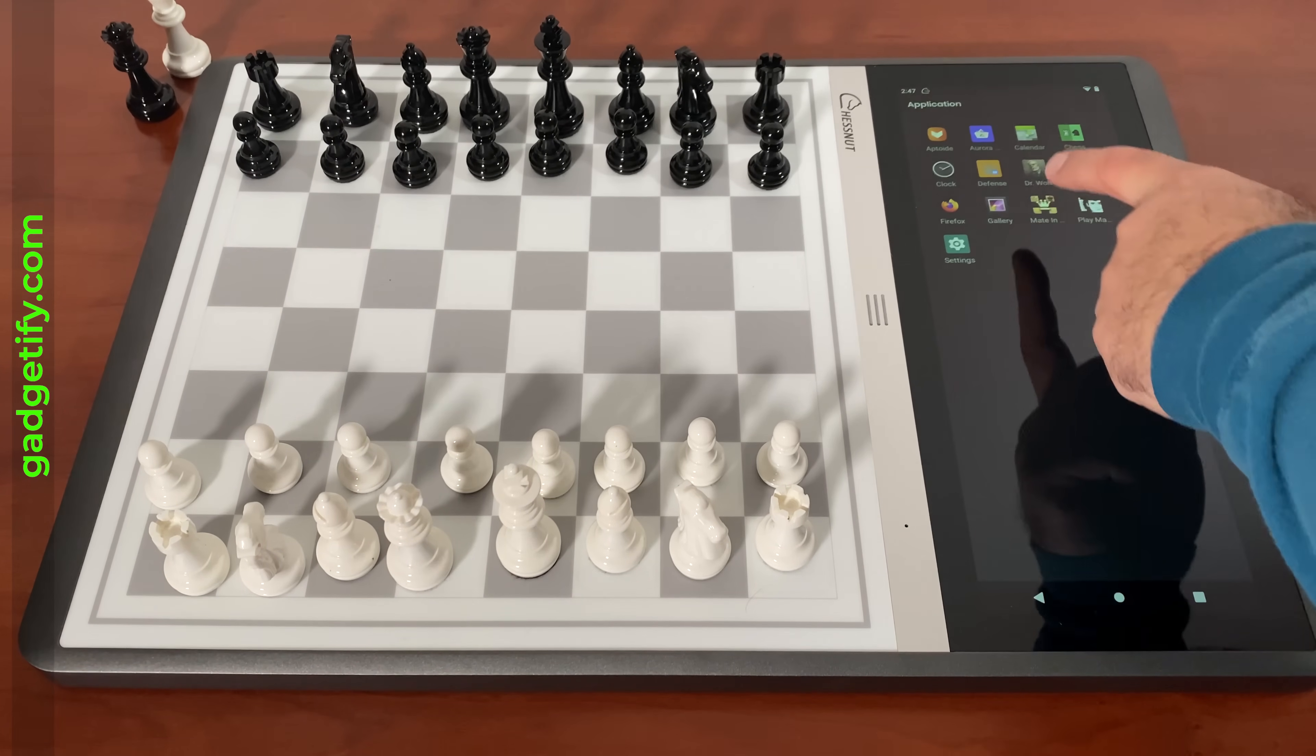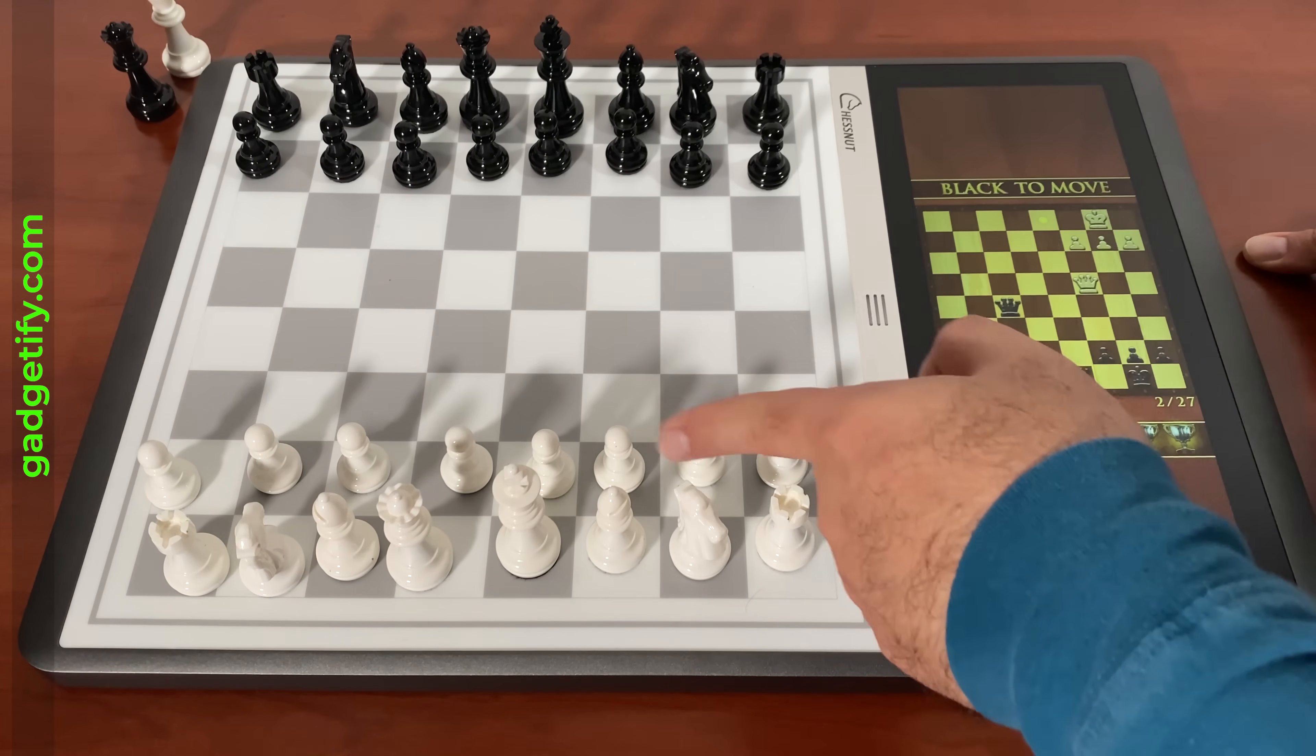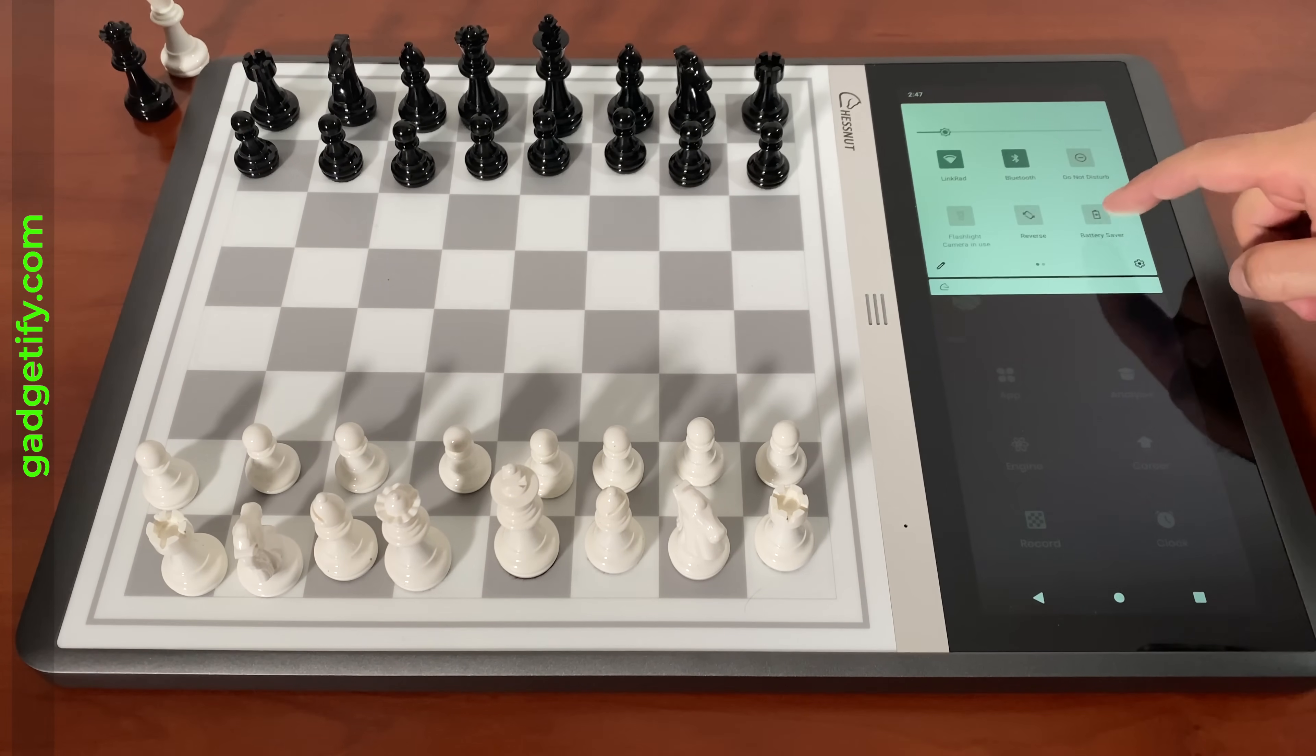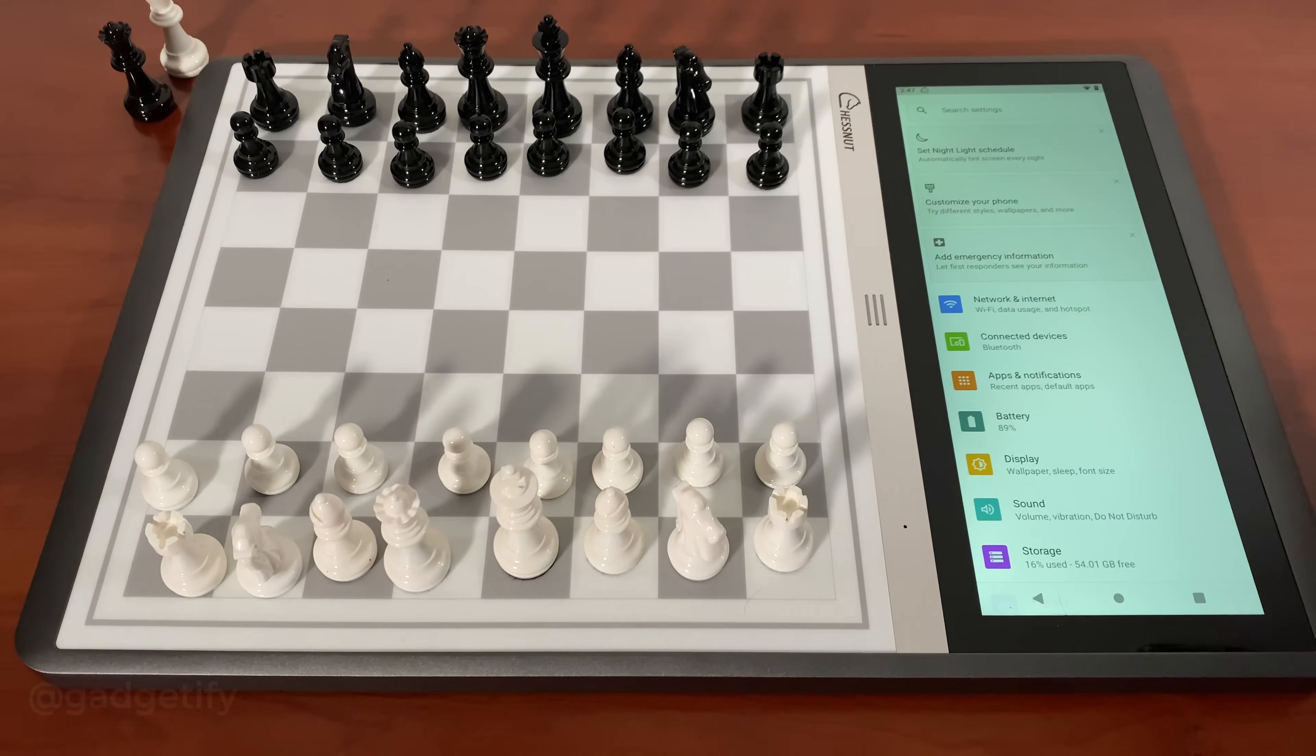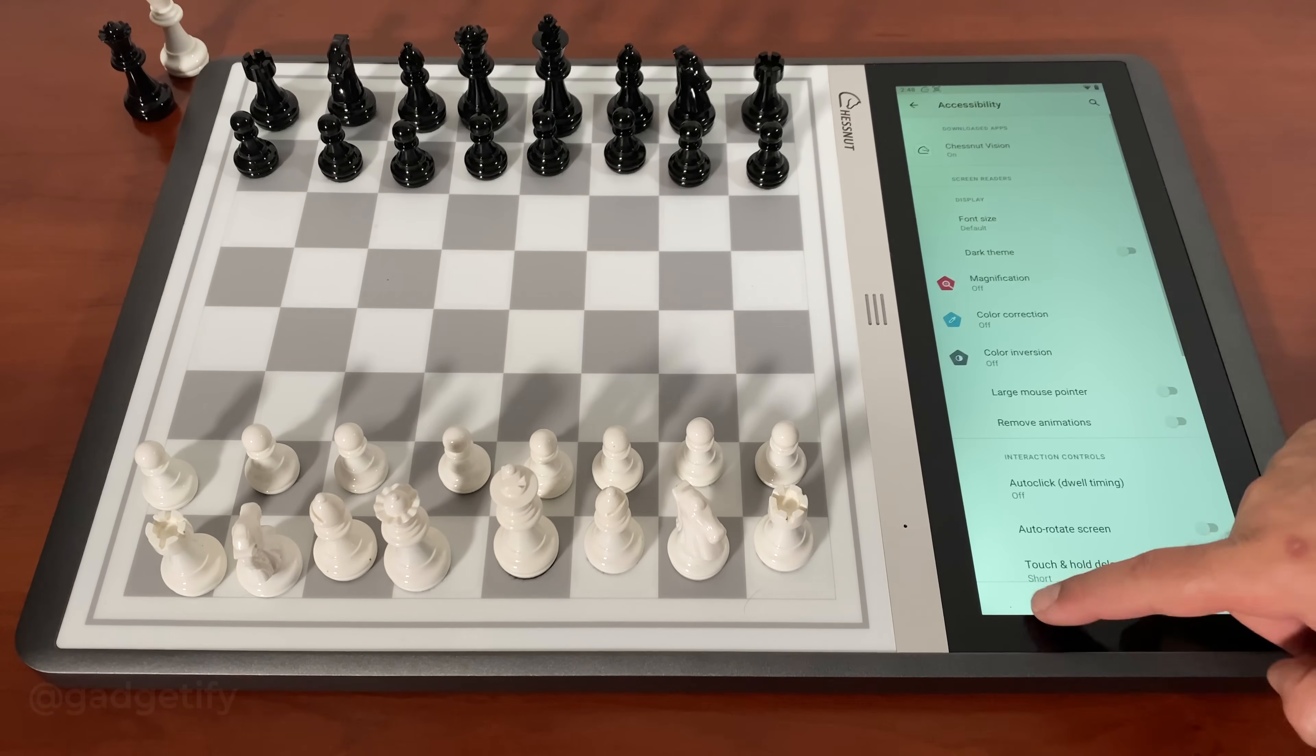So the app is downloaded here. Now as you can see, whatever is happening here is not showing up here. Now why is that? It's because I haven't actually activated the Chess Vision feature which is available here. Chess Vision - I turn this on, now you're going to see a difference.